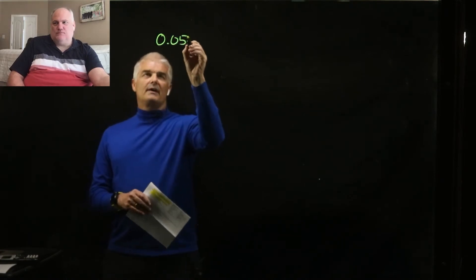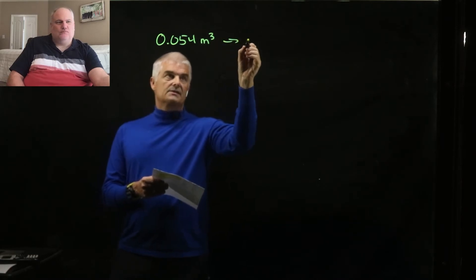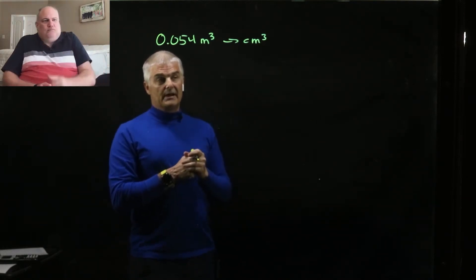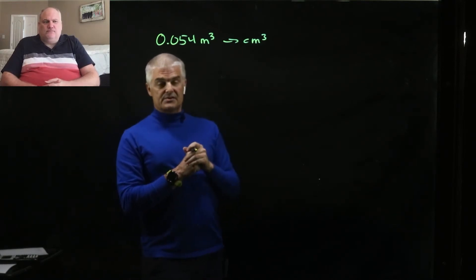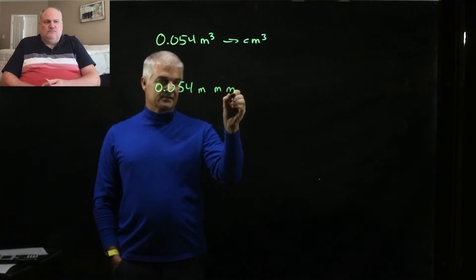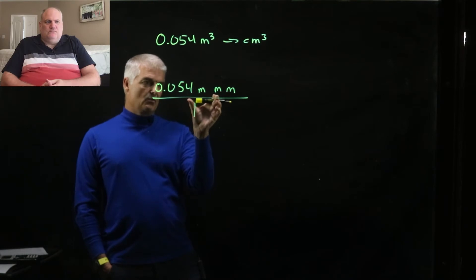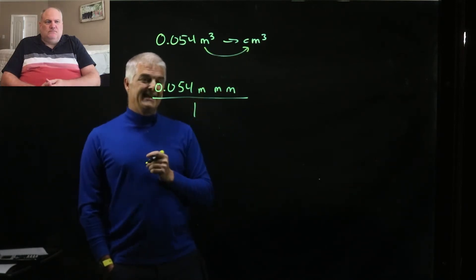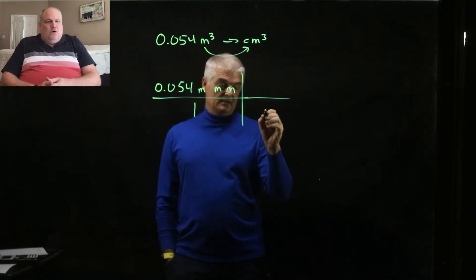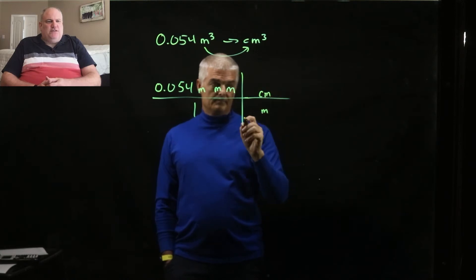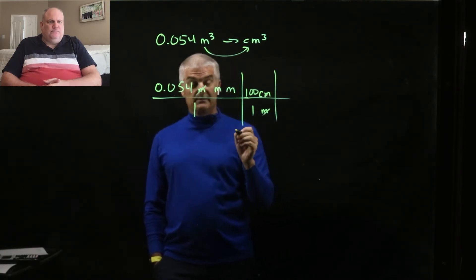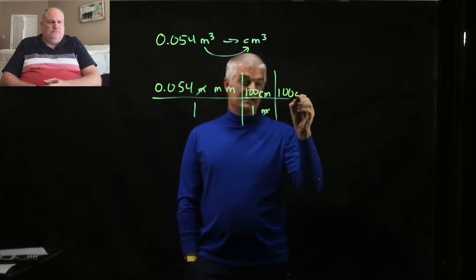Our next example: convert 0.054 meters cubed into centimeters cubed. This one's tricky because it has cubic units — volume, a meter by a meter by a meter, to a centimeter by a centimeter by a centimeter. You have to write them separately. So I write 0.054 meter, meter, meter over one. Now I have to do the conversion from meters to centimeters three times. One meter goes on the bottom to cancel, centimeters on the top — there are 100 centimeters in a meter.